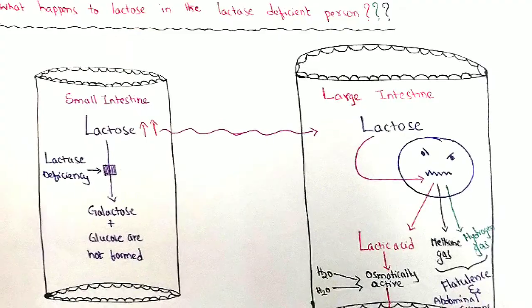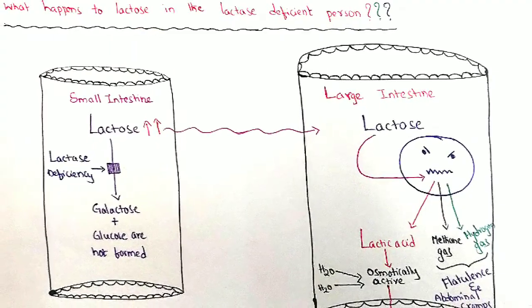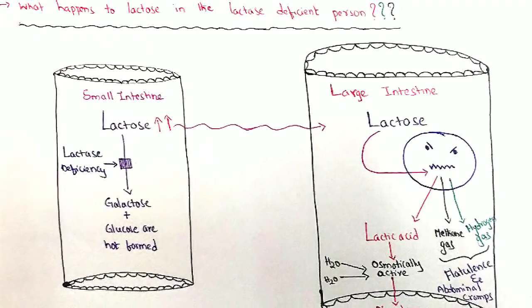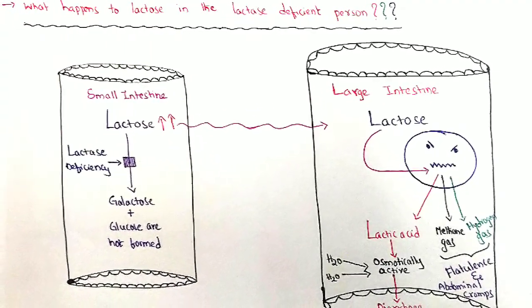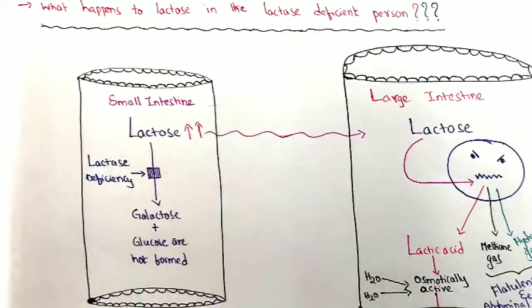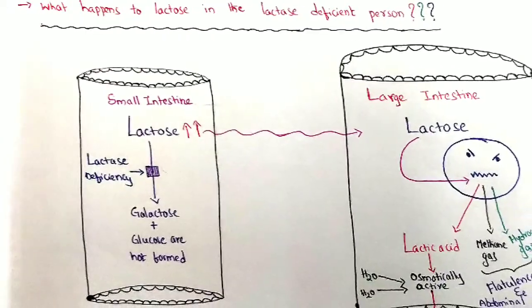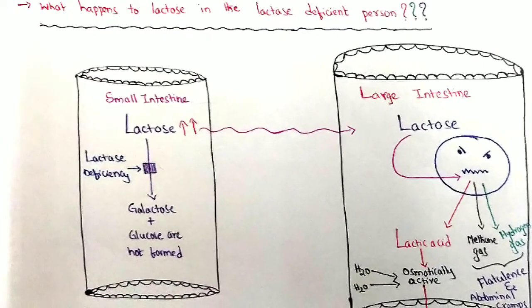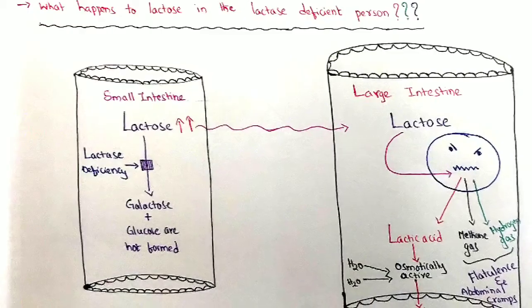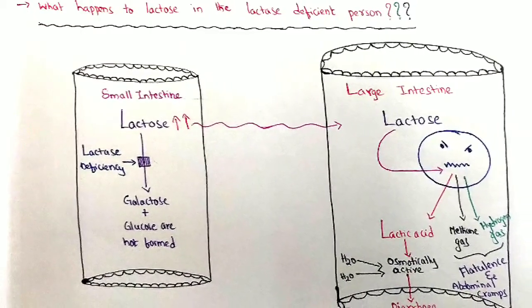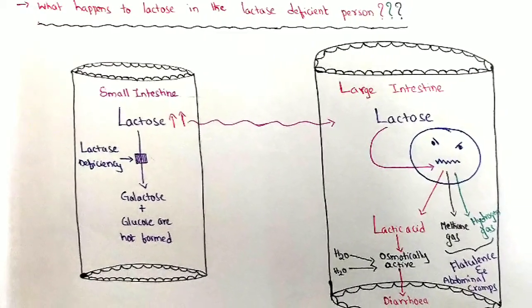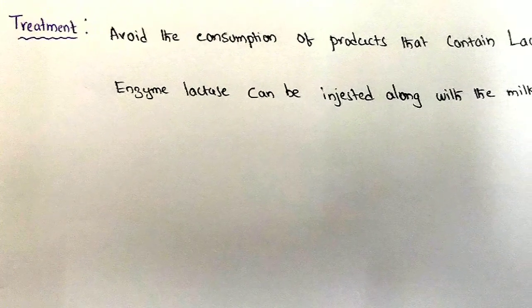Other products are two gases: methane gas and hydrogen gas. These two gases are responsible for the flatulence and abdominal cramps seen in case of lactose intolerance.